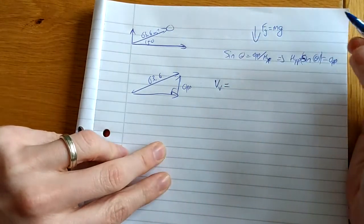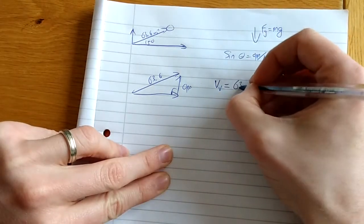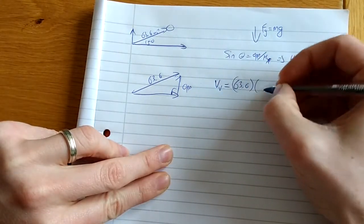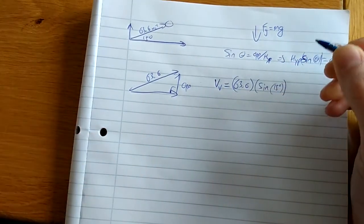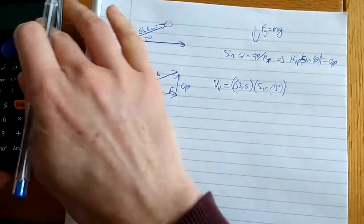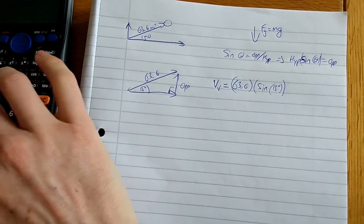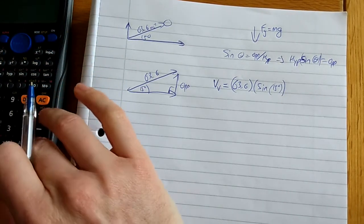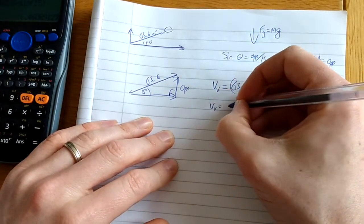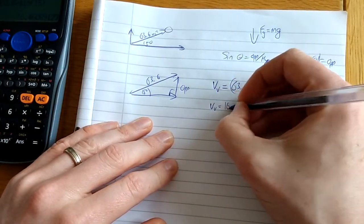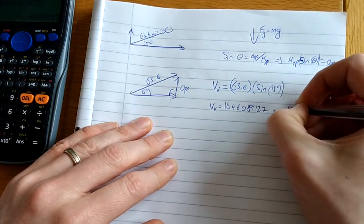The vertical velocity, or the opposite in our trigonometry, equals the hypotenuse times sine of theta. So 63.6 multiplied by the sine of 15 degrees. I'm going to do 63.6 multiplied by sine of 15, close my brackets, making sure I'm working in degrees. So my vertical velocity is 16.46 meters per second.